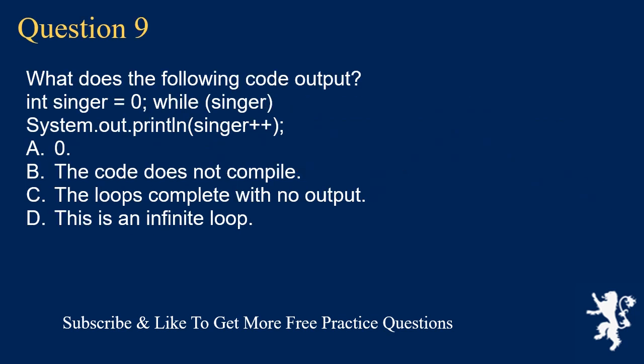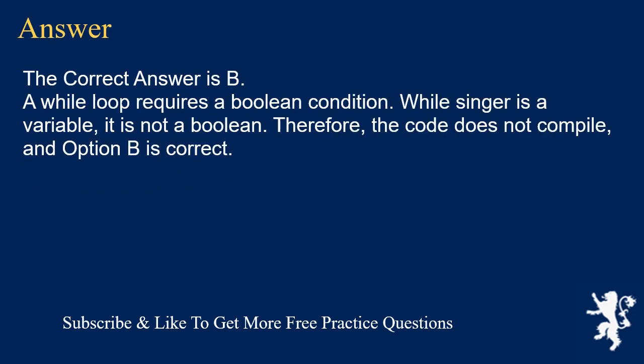Question 9. What is the following code output? int singer = 0; while (singer) { System.out.println(singer++); } A. 0. B. The code does not compile. C. The loop completes with no output. D. This is an infinite loop. The correct answer is B. A while loop requires a boolean condition. While singer is a variable, it is not a boolean. Therefore, the code does not compile, and option B is correct.